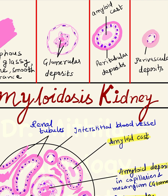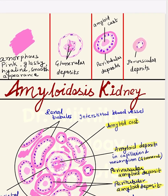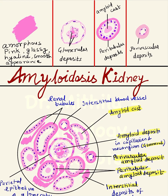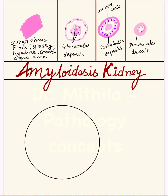Grossly, when there is amyloid kidney, the kidney is slightly enlarged and very pale, translucent in appearance. In later stages it can shrink because of vascular narrowing and loss of blood supply, so it can become shrunken at a later stage. But initially it may be normal in size or even enlarged, and the cut section will have a greasy and translucent appearance.